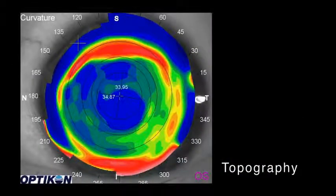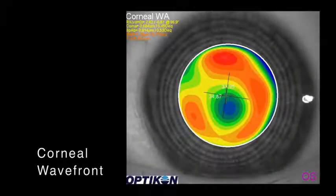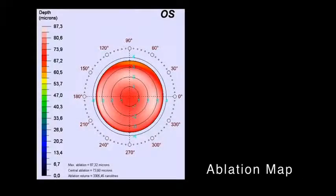Transepithelial approaches allow maximum correspondence between the corneal topography and the ablation profile. The sophisticated Amaris software compensates for the slight differences in photoablative rates of the stroma and the epithelial tissue.